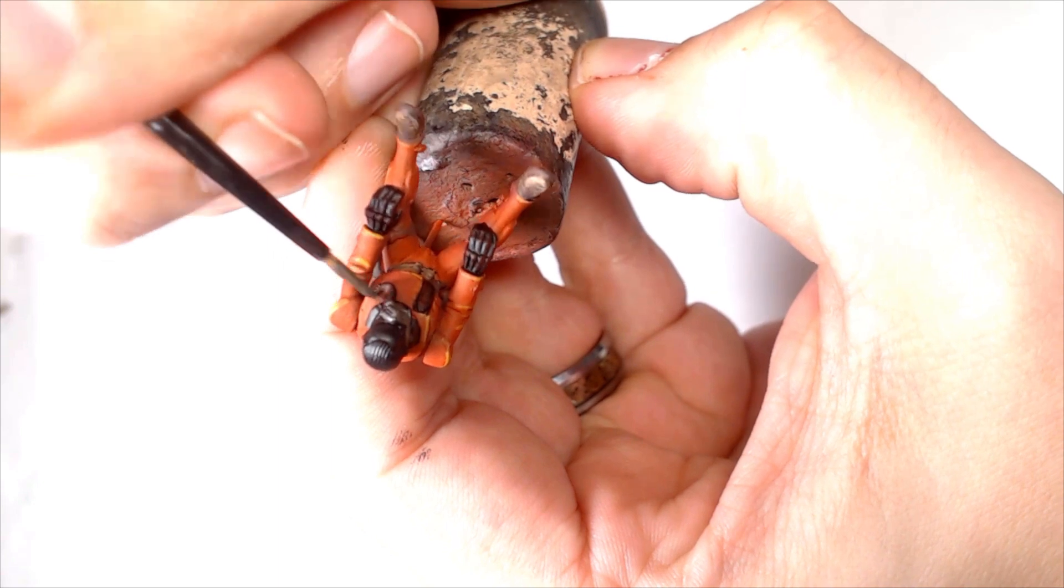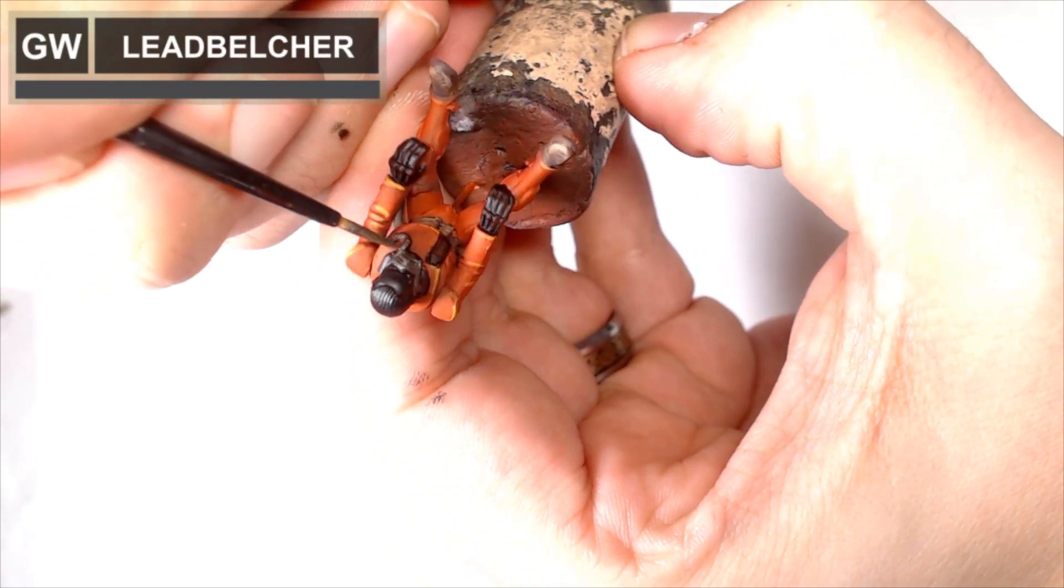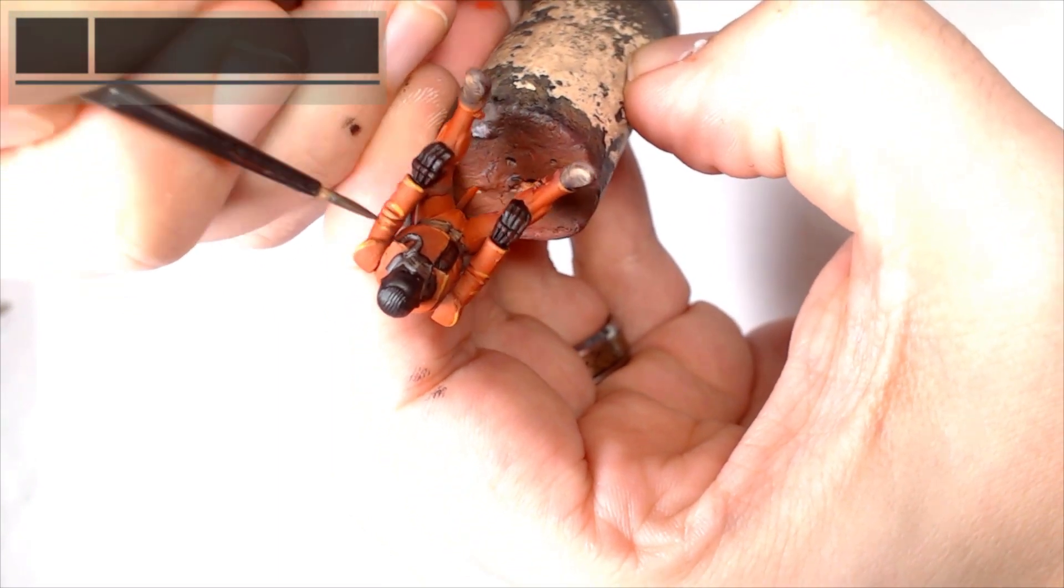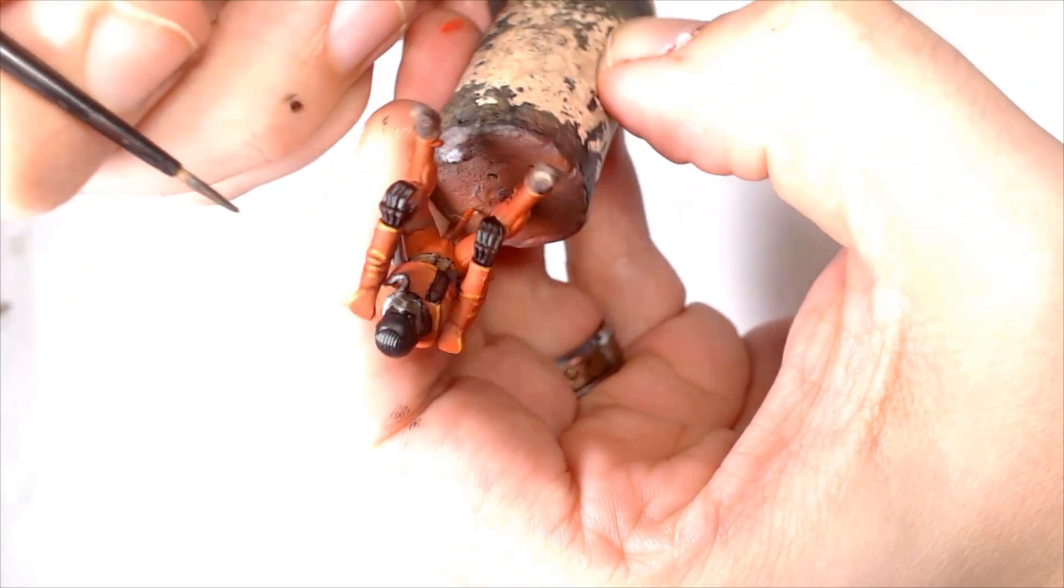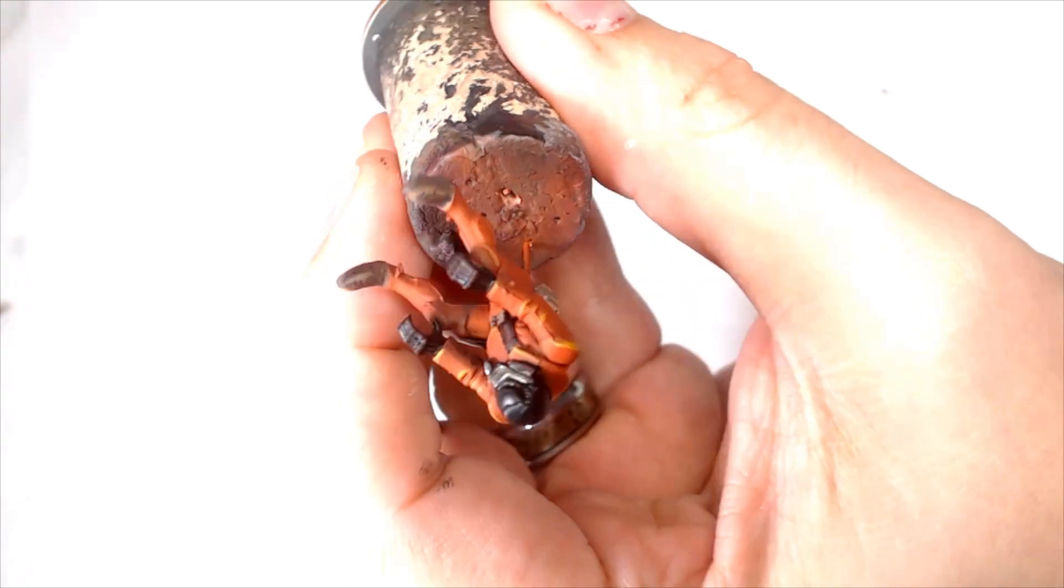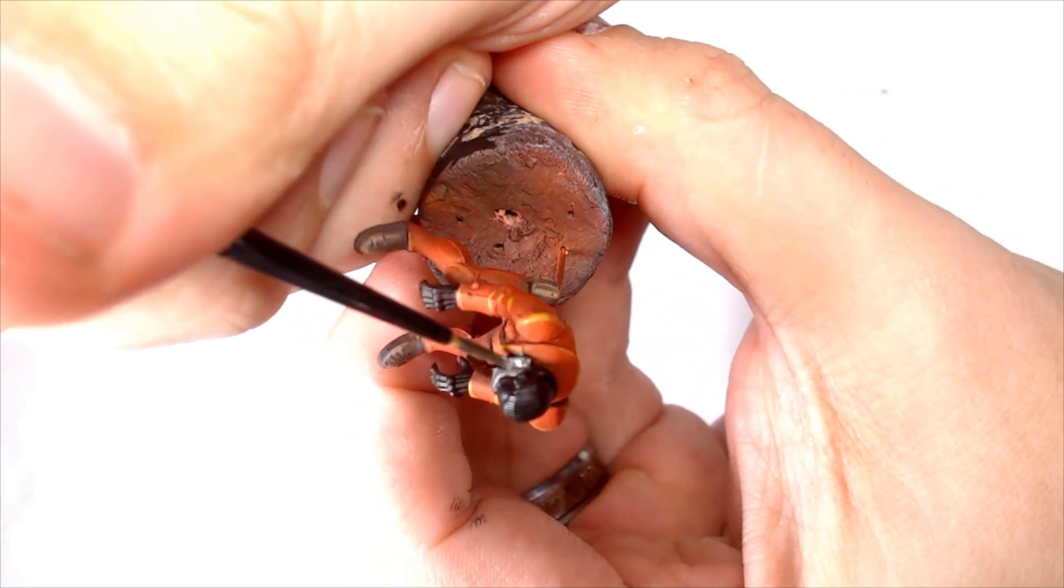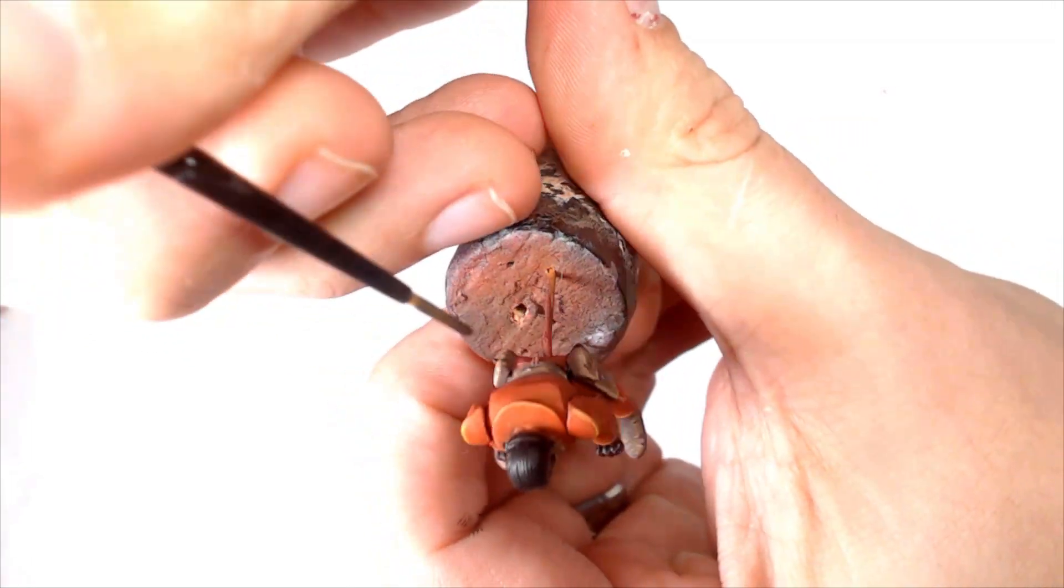So now it is Lead Belcher, a nice GW paint for any other silver work, any other metals. Add it just straight on there, obviously thin down a little bit. You want a good coverage but you don't want to be obscuring any details.